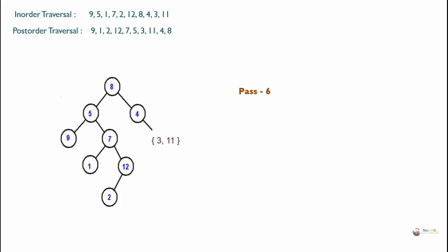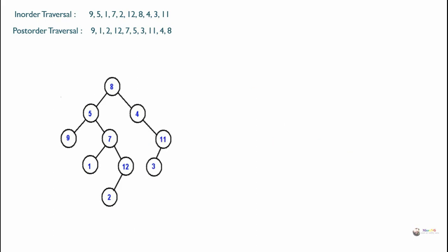Now out of 3 and 11 in post-order traversal, 11 is coming first from the end. Looking at in-order traversal and locating 11, we find that 3 is on the left of 11, so it forms the left subtree. It can be rewritten with root as 11 and its left subtree as 3.